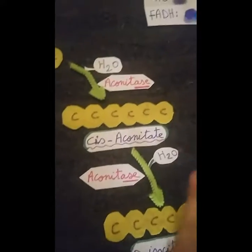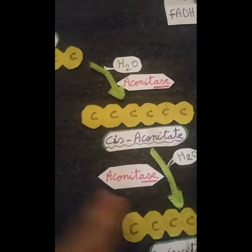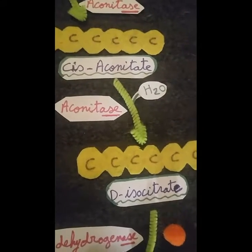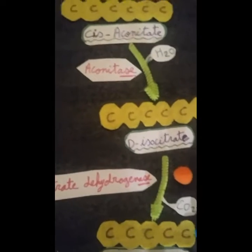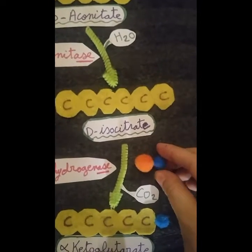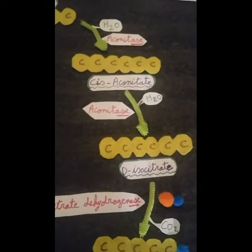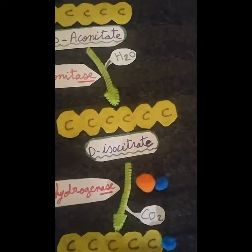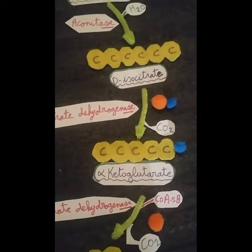From cis-aconitate, we add a water molecule in the presence of aconitase to produce isocitrate, also a six-carbon molecule. Then isocitrate dehydrogenase — any dehydrogenase removes hydrogen from the compound — removes hydrogen from isocitrate and transfers it to NAD, producing NADH. This is the second NADH produced from the Krebs cycle, giving another three ATPs. After that, one carbon dioxide is removed and isocitrate is converted to alpha-ketoglutarate, a five-carbon molecule.